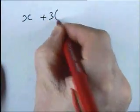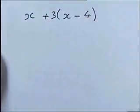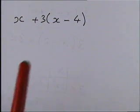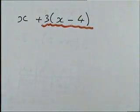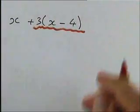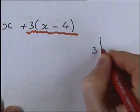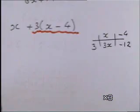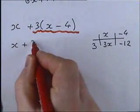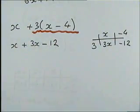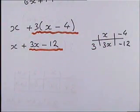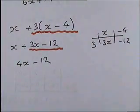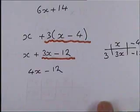Let's try another one: x + 3(x − 4). Pause the video and try it. We expand the bracket first using a grid: three x's give 3x and three times negative four gives negative twelve. So we have x + 3x − 12. Simplifying: x + 3x gives 4x, leaving the answer 4x − 12. That's type one.